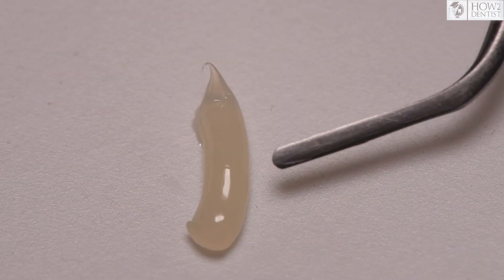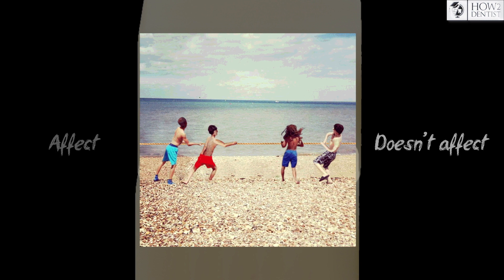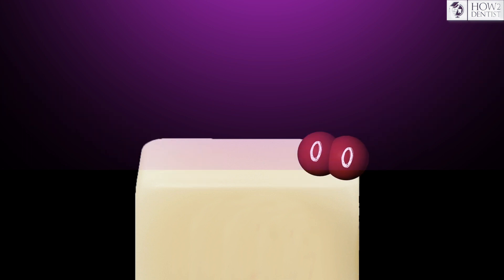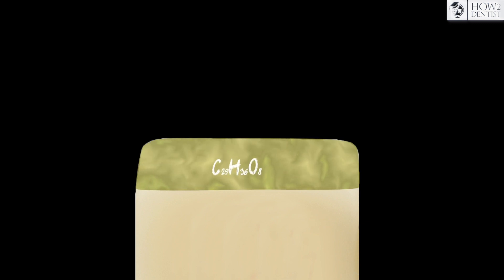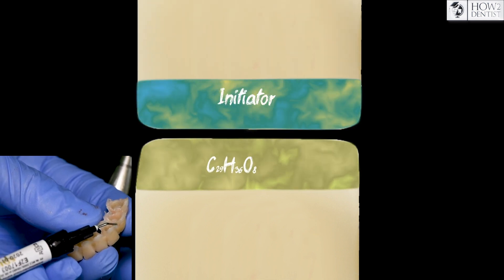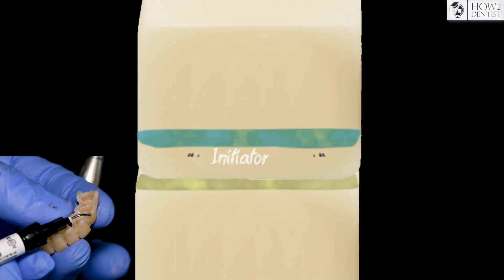Composite materials have the ability to form an inhibited layer. Scientists are still debating its effect on adhesion strength. Adhesion enhancement is explained by the fact that during polymerization, the surface of the composite in contact with oxygen forms an inhibited layer consisting of inactive monomers of the polymer matrix. When packing a new layer of material, the initiator again activates the monomers of the inhibited layer, causing adhesion.